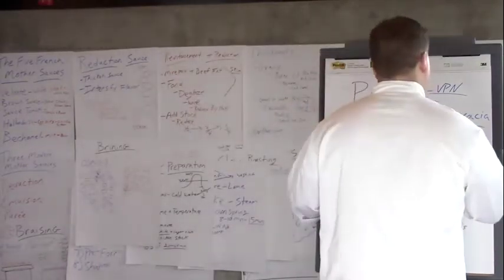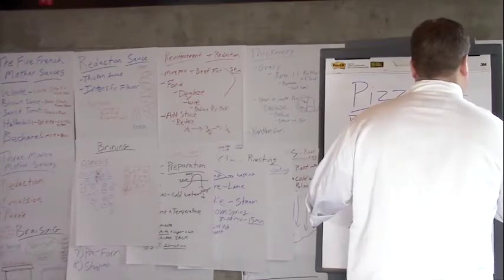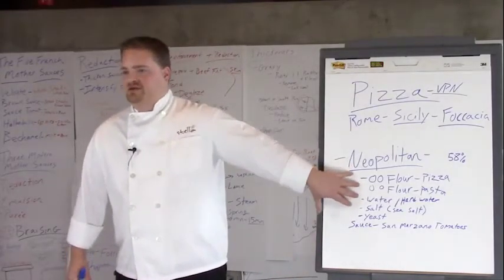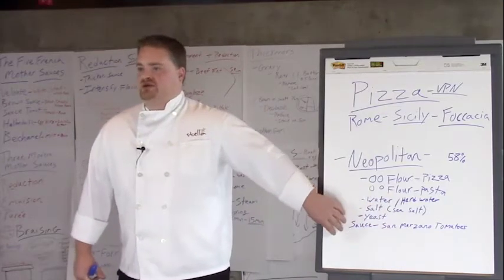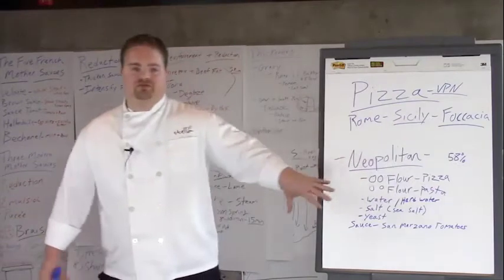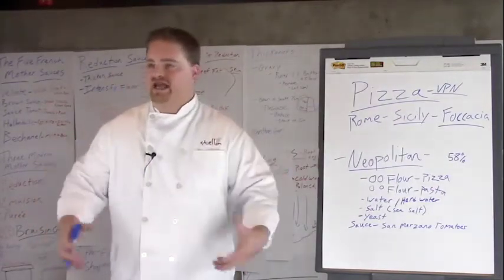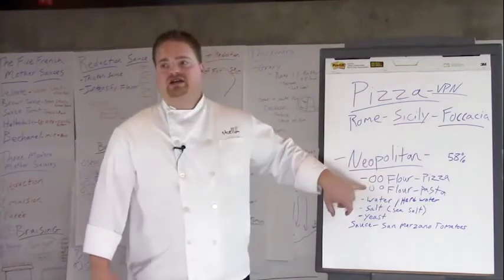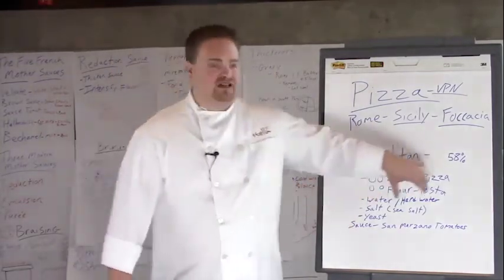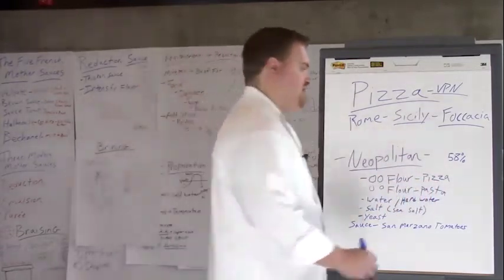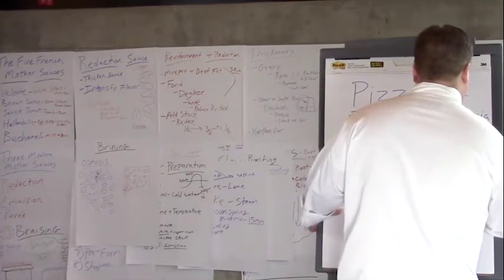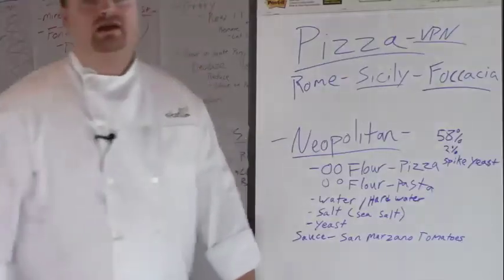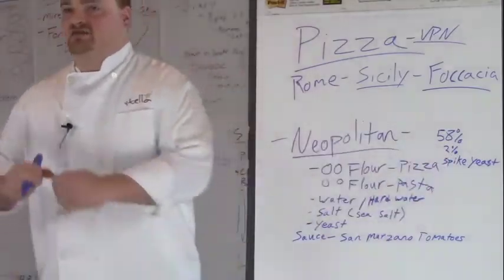For our Neapolitan pizza, we use a 58% hydration rate, which when you mix it is very stiff. But it's not quite as stiff as if you mixed it with bread flour at 58% hydration because there's a little bit less gluten. The more gluten you have in your dough, the stiffer it will be — or the more water it can absorb, so you need a higher hydration rate. The double-aught pizza flour contains around 11% gluten. Then 2% salt and a spike of yeast.